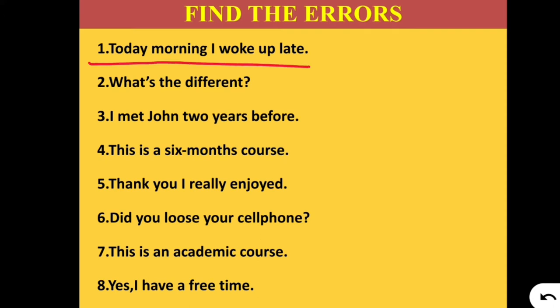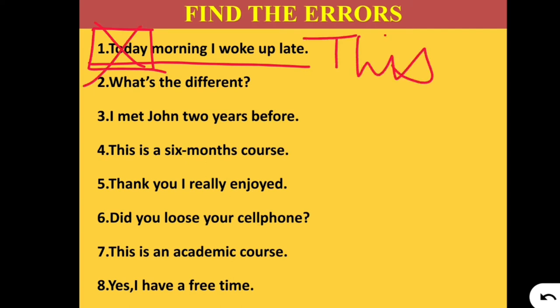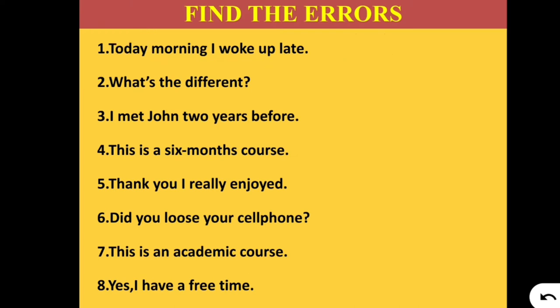Sentence 1: 'Today morning, I woke up late.' Where is the mistake here? The mistake is 'today morning' — we don't say that. Instead, we have to say 'this morning.' So the correct sentence is: 'This morning, I woke up late.' 'Today morning' is a grammatically wrong expression.